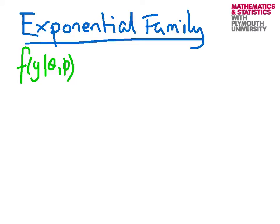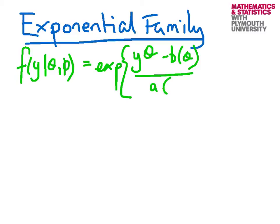We can write either its density or mass function in this format. It's a function of y given two parameters in general, theta and phi, and these are e to the power y multiplied by theta minus b of theta divided by a of phi plus c of y and phi.